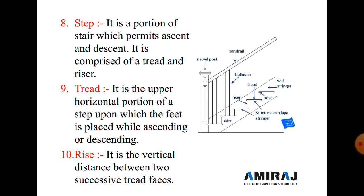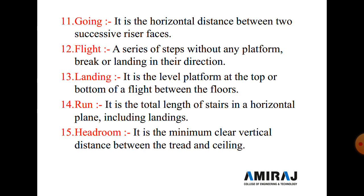Next is the rise. The rise is the vertical distance between two successive tread faces; generally the rise height is taken as 20 centimeters. If more than 20 centimeters is used, it becomes difficult for a person to use the stairs. Next is going. Going is the horizontal distance between two successive riser faces.